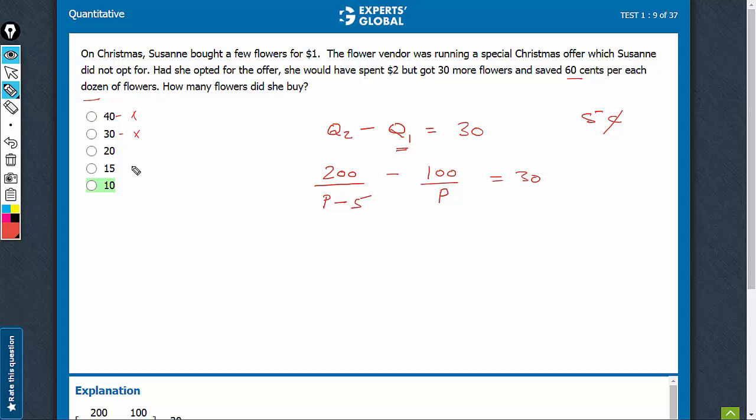So, you can try one of the smaller numbers. You will see 15 is not possible because 100 upon 15 will not be an integer. 100 upon 20 will be exactly 5. So, let's try 20.